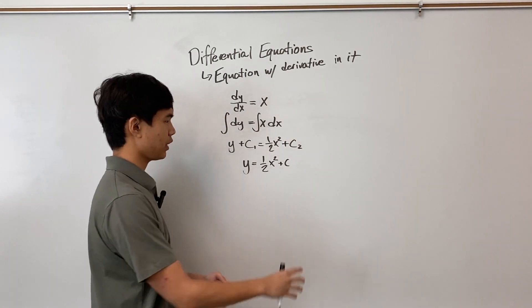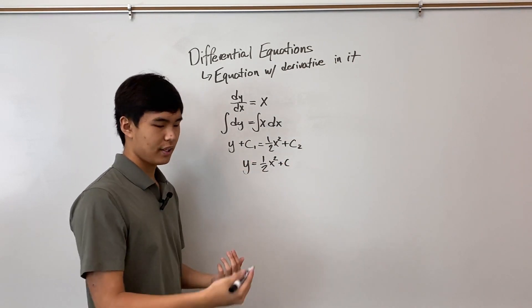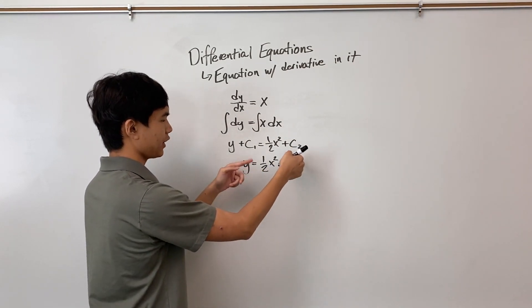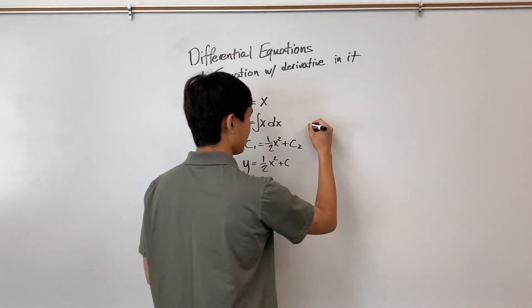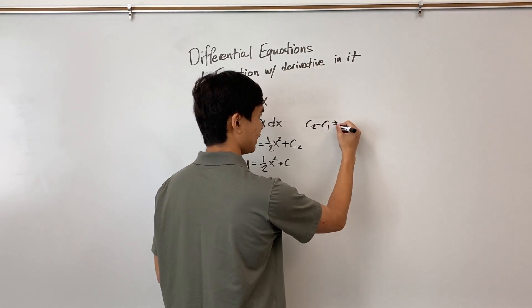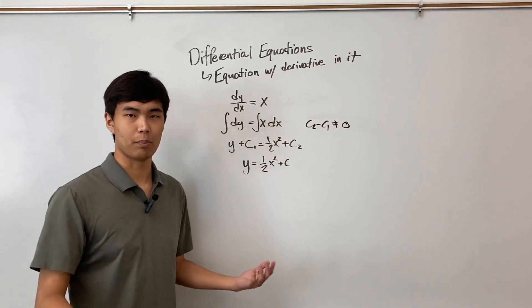And the reason why we can't just cancel these two plus c's out is because we don't know their values, they could be different. So we have to go with the assumption that c2 minus c1 is non-zero to account for all possibilities.